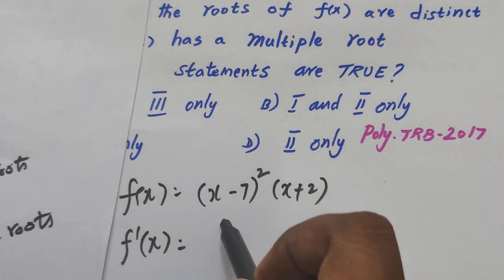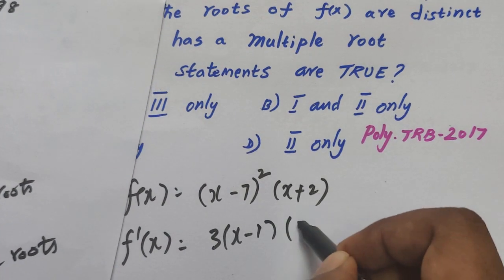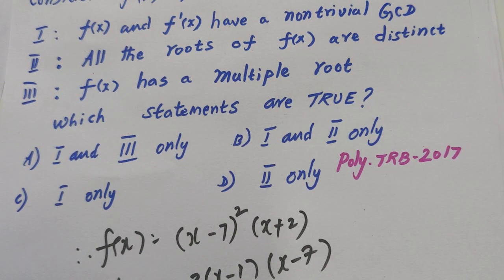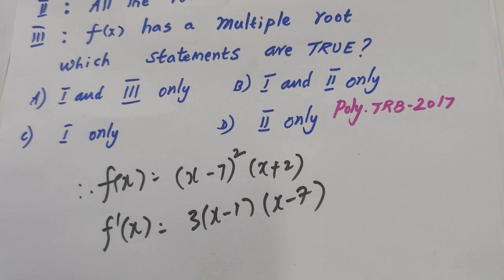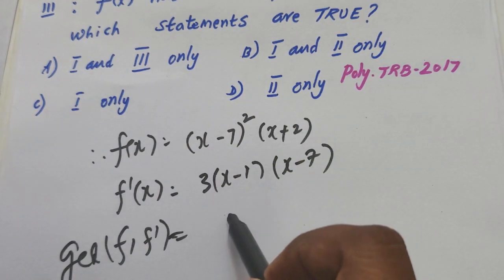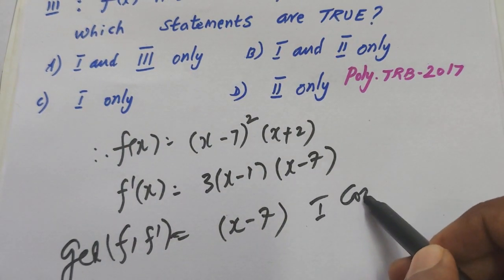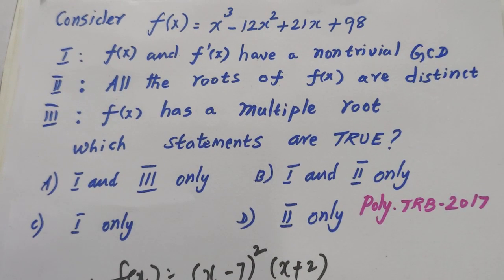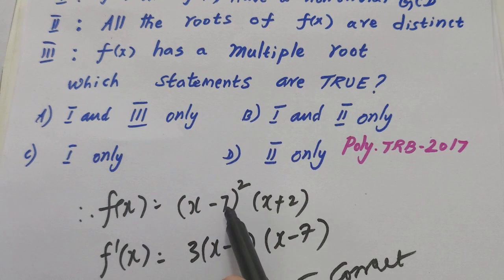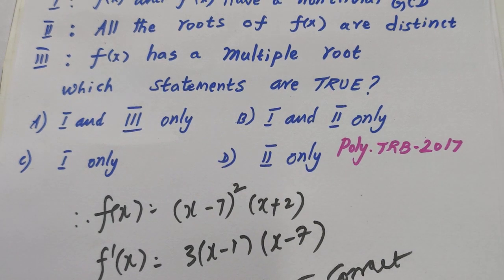f dash of x factors as 3(x minus 1)(x minus 7). The GCD of f of x and f dash of x is x minus 7, which is non-trivial — so Statement 1 is correct. The roots of f of x are x equals 7, 7, and minus 2, so they are not all distinct — Statement 2 is false. Since x equals 7 is a repeated root, Statement 3 (f has a multiple root) is also correct. Therefore the answer is Statements 1 and 3.